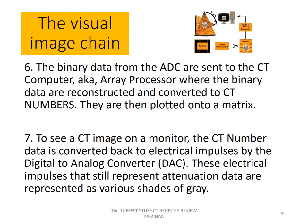In step six, the binary data from the analog to digital converter are sent to the CT computer, otherwise known as the array processor. This is where the binary data are reconstructed and converted to CT numbers, then plotted onto a matrix by way of filtered back projection. Number seven, to see a CT image on a monitor, the CT number data is converted back to electrical impulses by the digital to analog converter. These electrical impulses, which still represent attenuation data, are displayed as various shades of gray on the monitor.